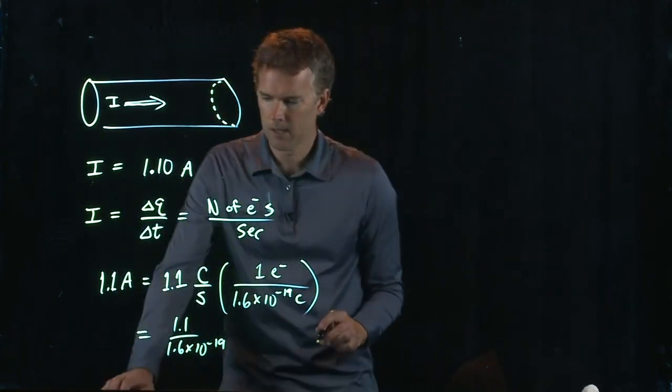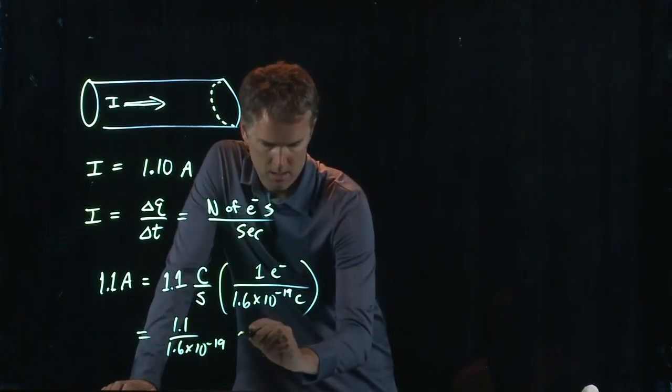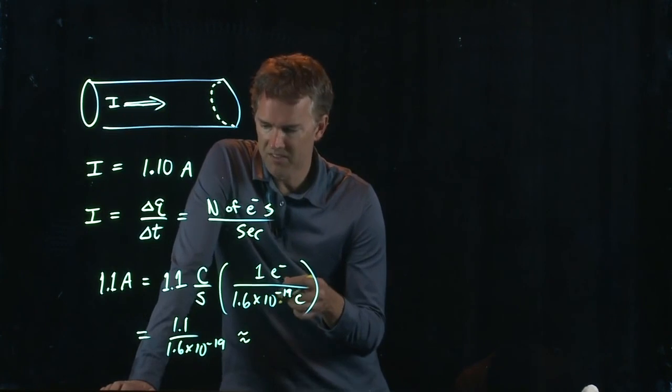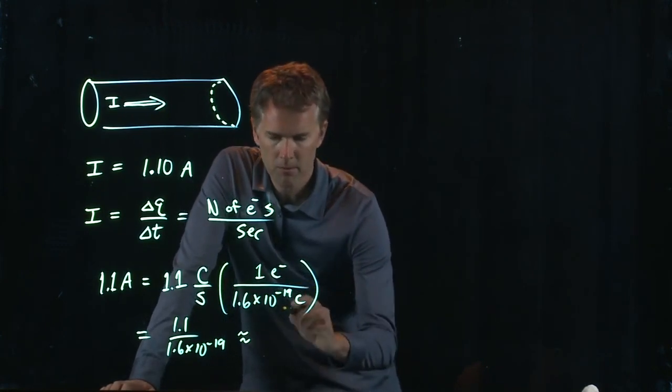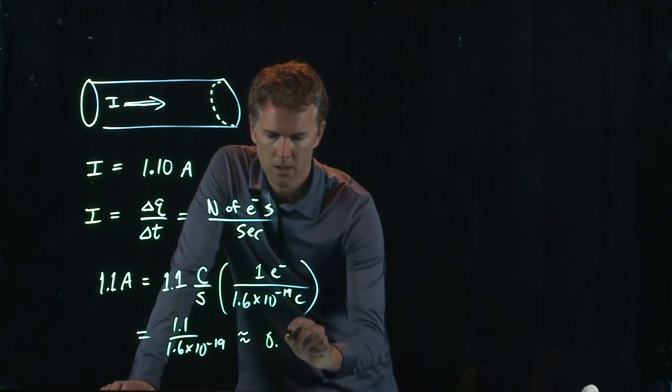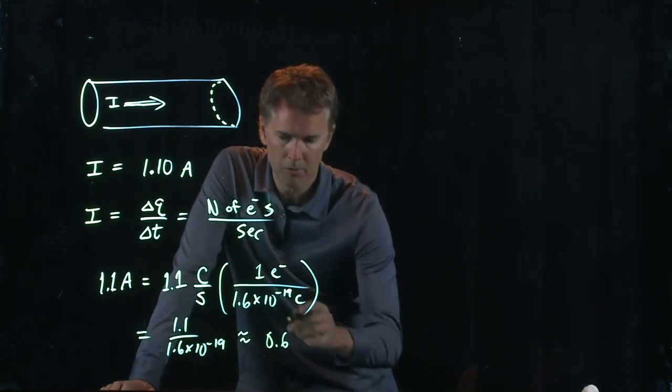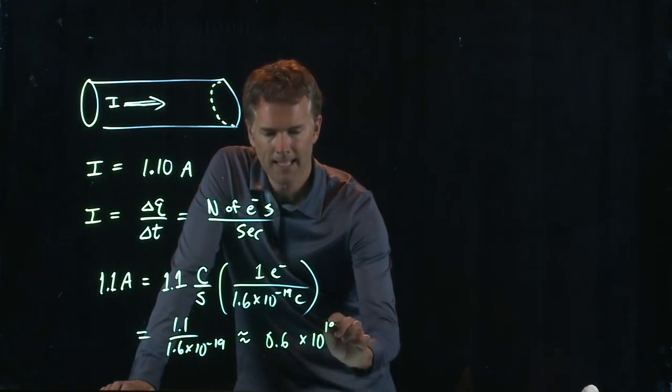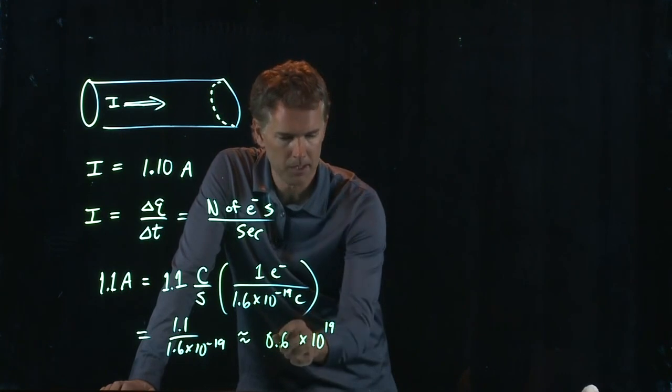Somebody punch that into your calculator and tell me what you get. 1.1 over 1.6. That's got to be really close to 0.6 something. Maybe closer to 0.7. And then we have times 10 to the 19. That thing ends up on the top. Anybody get a real answer there?